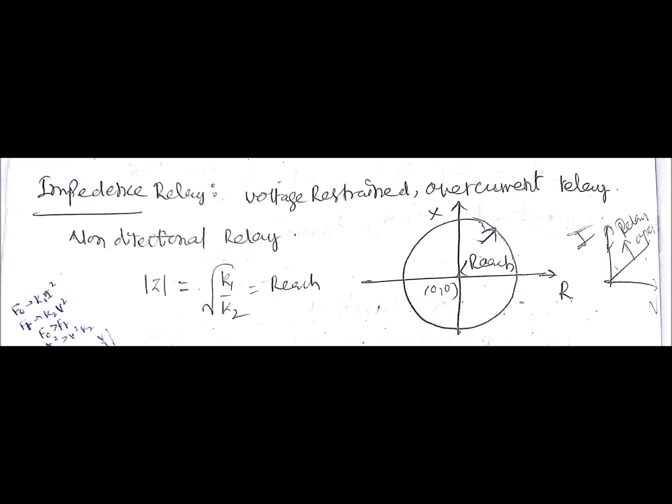Coming to the impedance relay — it is a voltage-restrained overcurrent relay. The restraining force is due to voltage in the case of the impedance relay. We need both operating force and restraining force for a relay to operate. The restraining force is due to voltage and the operating force is due to current, since it operates only when current becomes greater than the pickup value.